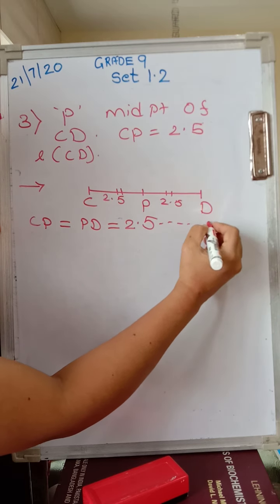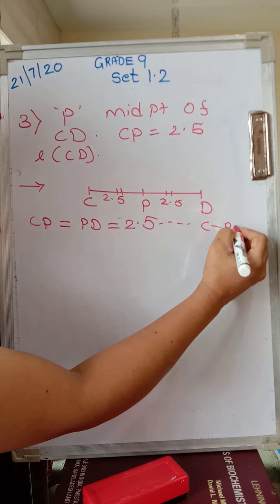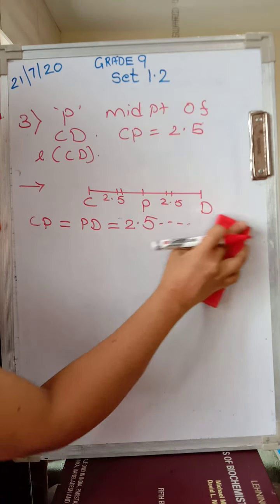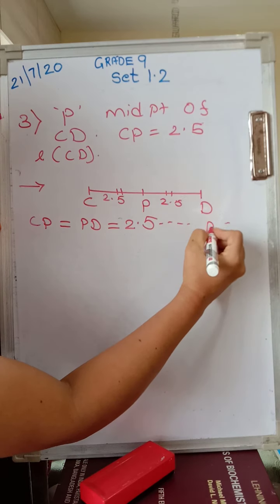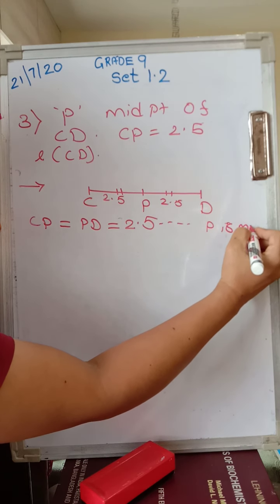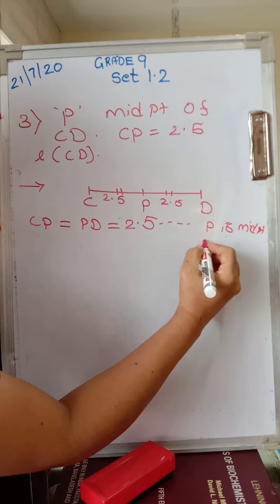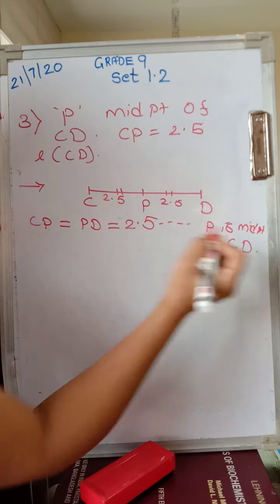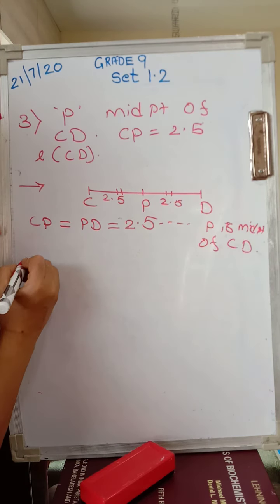What is the reason for this? The reason is P is the midpoint of CD, which is given. Alright, so this is the first step.